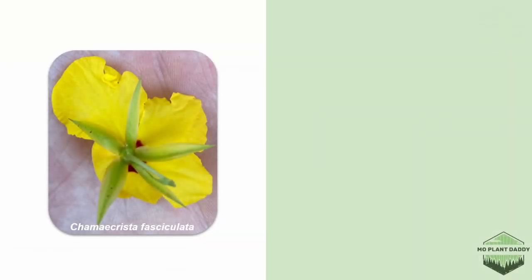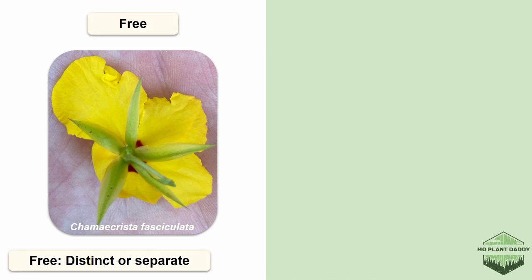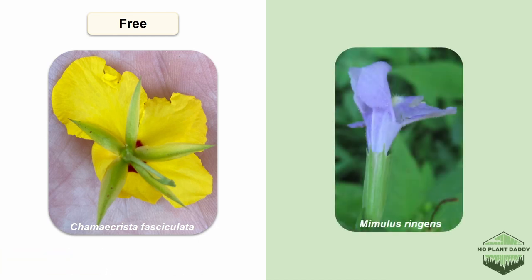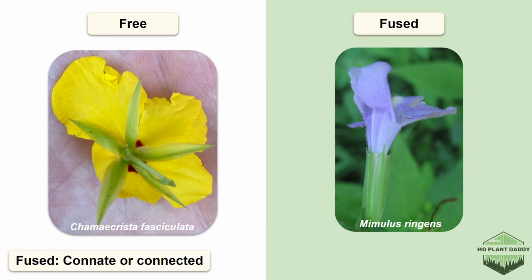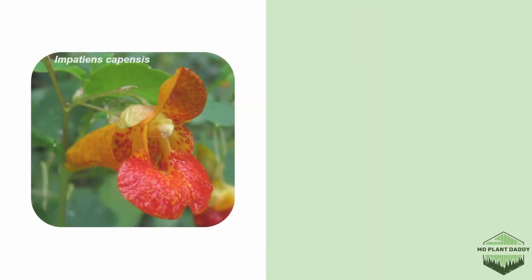Something you may have noticed is that some species have flowers with whorls that are fused together while others have unfused whorls. Whorls that are unfused, such as the calyx of this partridge pea flower, are known as free — each sepal of the calyx is distinct or separated from the others. Whereas if we look at the flower of an Allegheny monkey flower, we'll see that its calyx is fused and all of its sepals are connate, or connected, and have formed a tube.